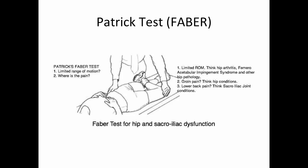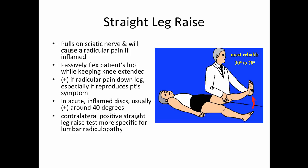The straight leg raise: passively flex the hip while keeping the knee extended. Radicular pain down the leg — especially reproducing the patient's symptoms — is a positive test. Radicular pain is usually sharp, electric, shooting pain, not just hamstring tightness. Pain in the 30 to 70 degree arc, most accurately around 40 degrees, suggests an acute inflamed disc pushing on a nerve. A contralateral positive straight leg raise is more specific — lifting the opposite leg causes shooting pain down the leg in question.